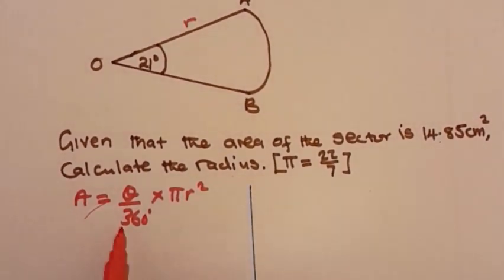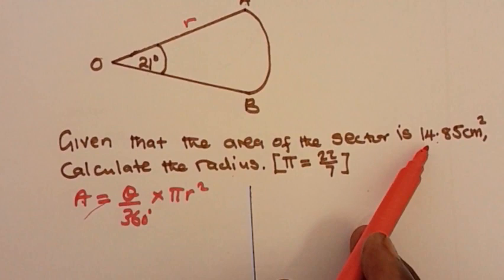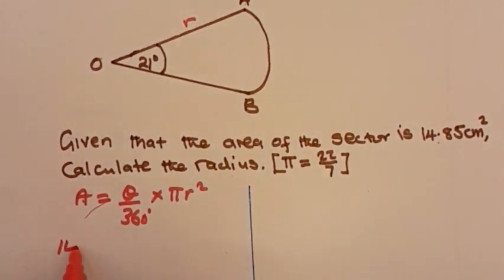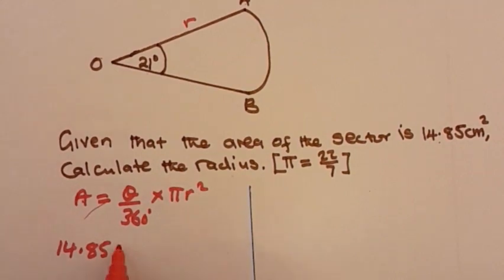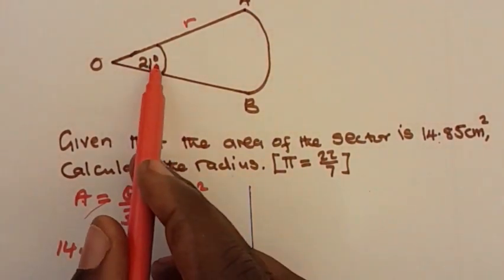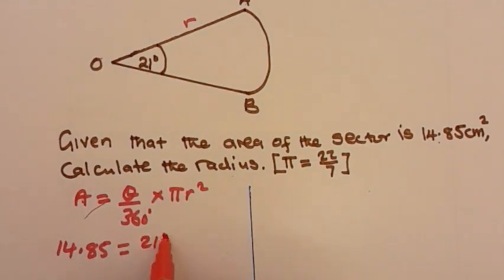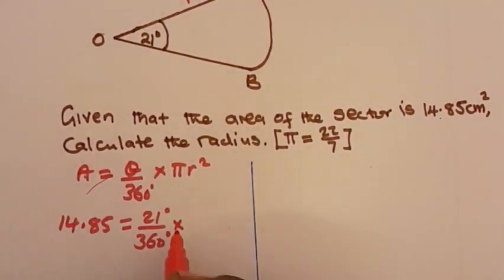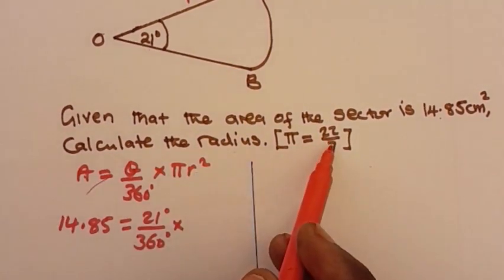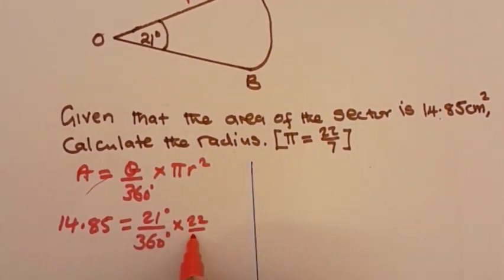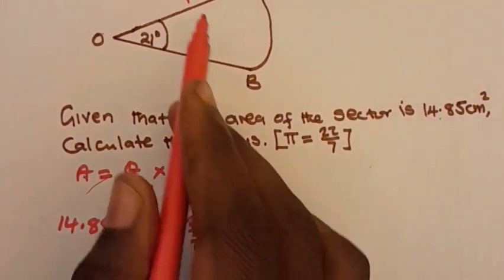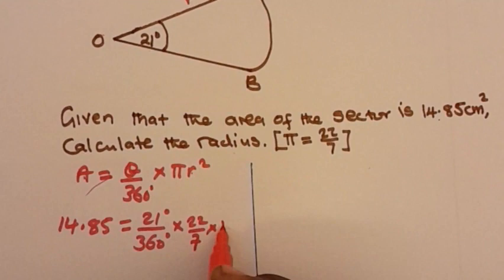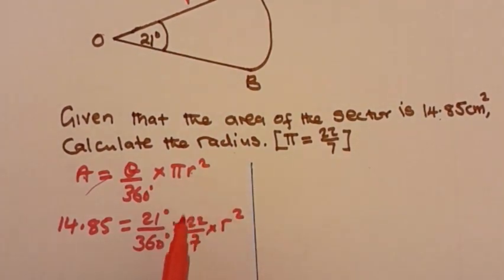Now we start substituting. We replace the area with 14.85, so we have 14.85 is equal to 21 degrees divided by 360 degrees, times pi — and we take pi to be 22 over 7 — times r squared. The radius is the one we are looking for, so it remains as r squared.